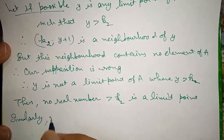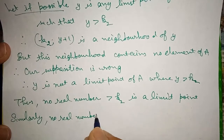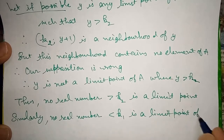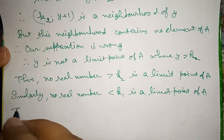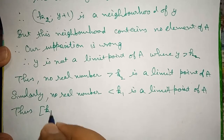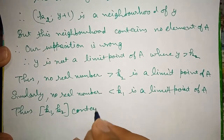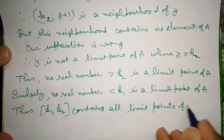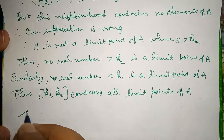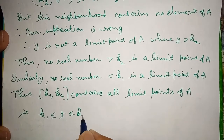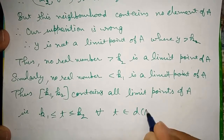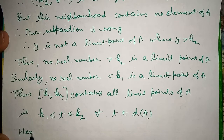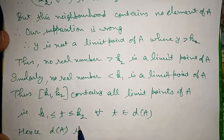Similarly, we can show that no real number less than K1 is a limit point of A. Thus, K1 ≤ T ≤ K2 for all T belonging to DA. Hence, DA is a bounded set.